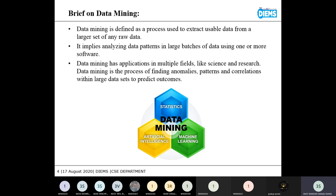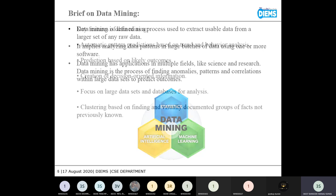So there are lots of applications of data mining in sciences and research. Data mining is the process of finding anomalies, patterns, and correlations within large data sets to predict the outcomes.